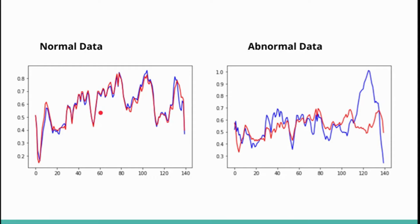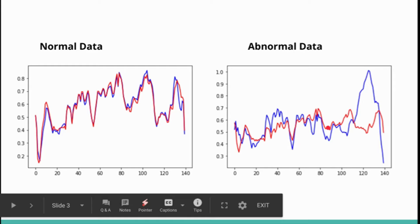This reconstruction error can then be used for anomaly detection. For example, a trained model shows the blue line as the actual data and the red line as the reconstructed output — the model performs well on normal data with small reconstruction error. When abnormal data is passed, the model has not seen it before, so it doesn't fit correctly: there are sudden peaks and lows, and the reconstruction error is very high.